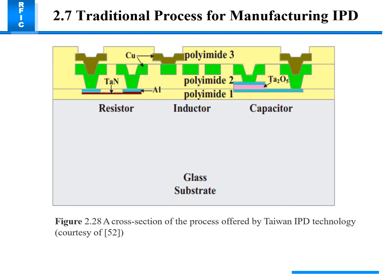The cross-section of the Taiwan IPD technology shows resistor, inductor, and capacitor on a glass surface which is very cheap. Materials include copper, polyimide 3, tantalum, aluminum, polyimide 2, polyimide 1, and Ta2O5.